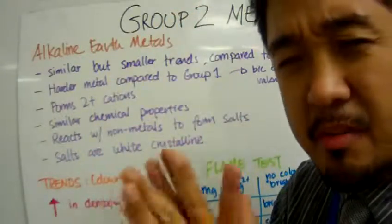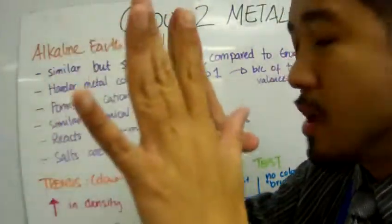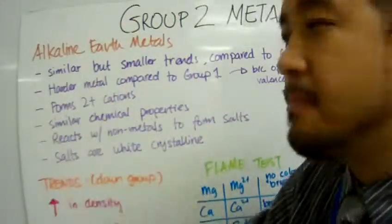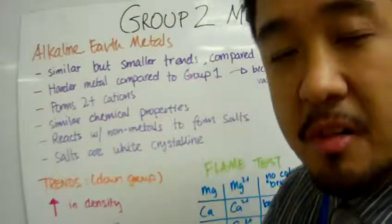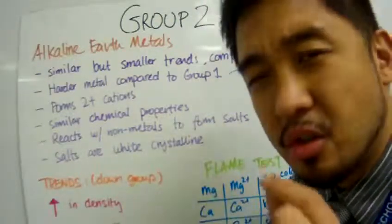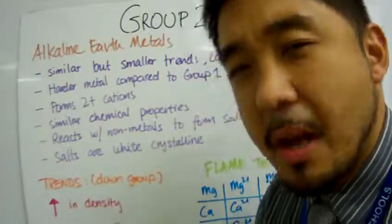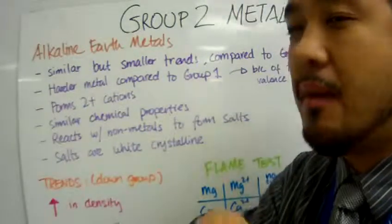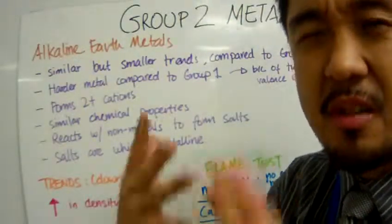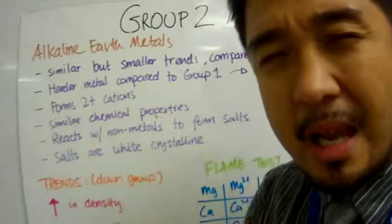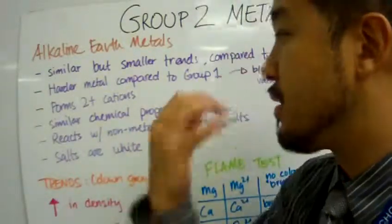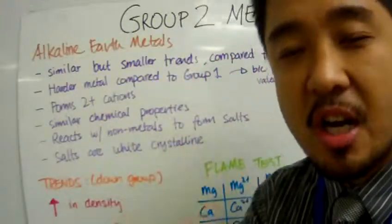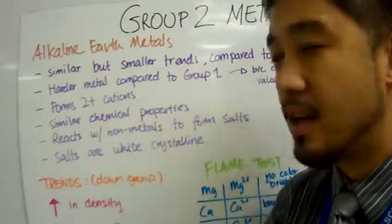Alkaline earth metals, group 2 metals, when they form a metallic bond, they are harder pieces of metal compared to the group 1 alkali metals because of the amount of available valence electrons for delocalized metallic bonding. When they form cations, they form 2-plus charged cations.